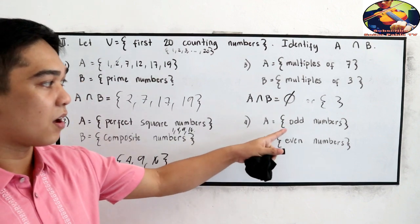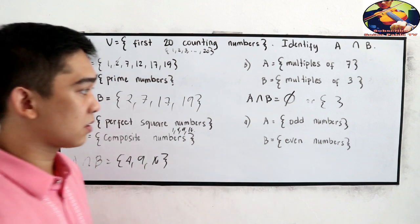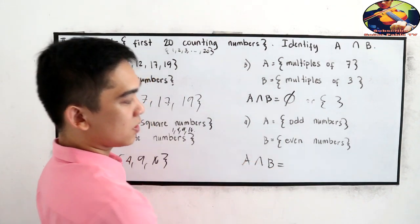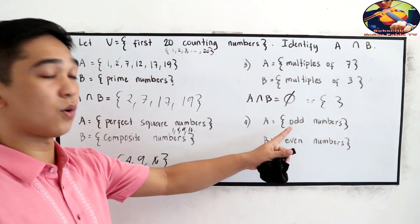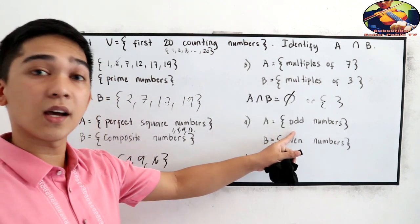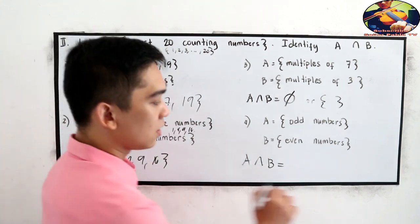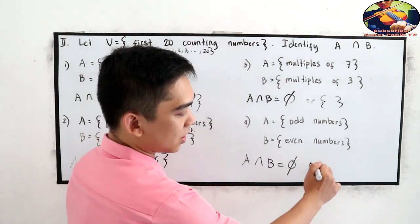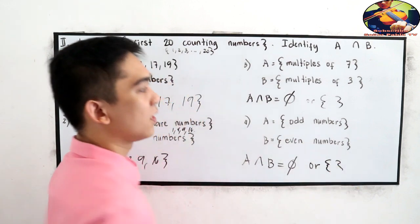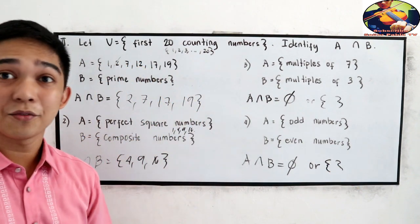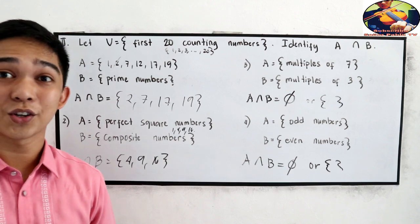Next, set A is odd numbers and set B is even numbers. A intersection B. So, odd. Those are 1, 3, 5, 7, 9, and even 2, 4, 6, 8. Do we have intersection? No. So, this is also empty. Hope that you get 1, 2, 3, and 4.